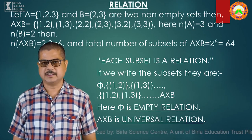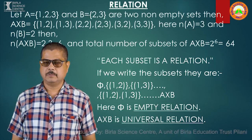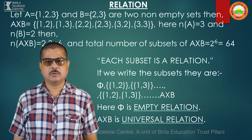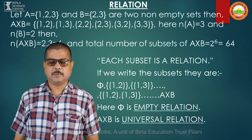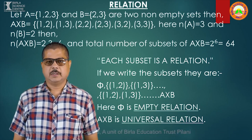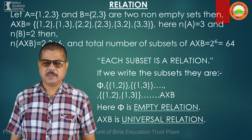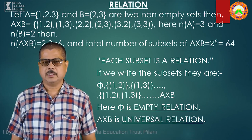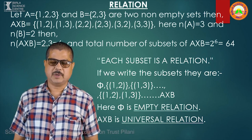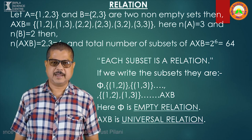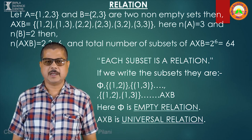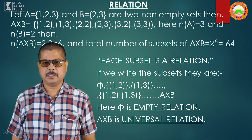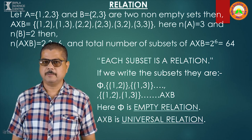Now, coming to the topic relation. Before the relation, we must know about the Cartesian product that we have studied earlier. Let there be two non-empty sets A and B. Here, I have taken A as {1, 2, 3} and B equal to {2, 3}.